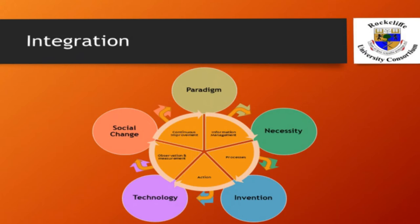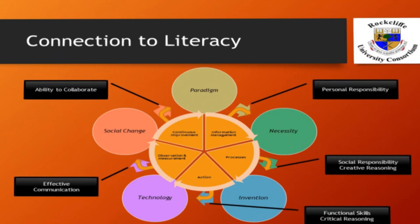The technosocial innovation cycle is connected to digital literacy in that each of the core skills acts as a catalyst, reinforcing the transition points in the life cycle. While each digital literacy skill has applicability to all life cycle elements, some skills have greater influence as a catalyst during these transition points than others. Where paradigm plus information management drives necessity, such necessity is only driven in the presence of personal responsibility as a catalyst.